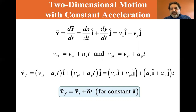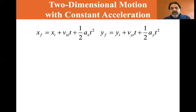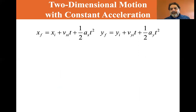Now we're going to do the same thing for the other equations of motion. x final equals x initial plus vxi·t plus one-half ax·t squared — you should be familiar with that equation. And y final equals y initial plus vy initial·t plus one-half ay·t squared. Most of the time, ay is g, the gravitational acceleration.